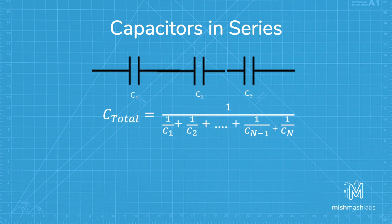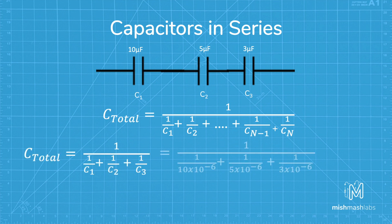Here's an example using a 10 microfarad, a 5 microfarad and a 3 microfarad capacitor. We can sub this into the formula and you can see it gives us a total of 1.579 microfarads.